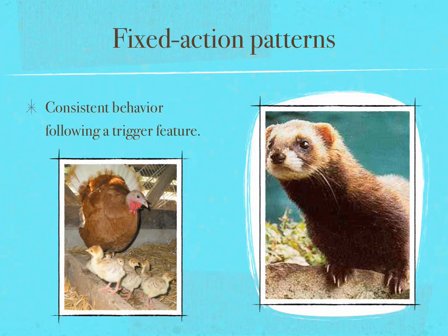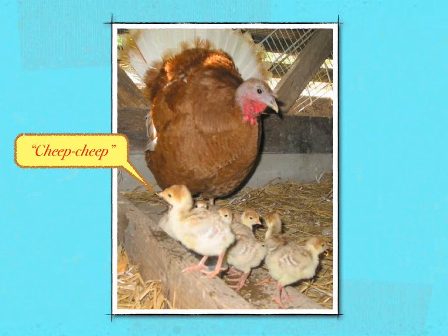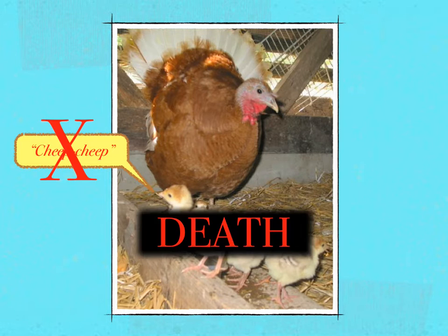Fixed action patterns denote consistent behavior following a trigger feature. Turkey mothers serve as a great example. Turkeys are good mothers — loving, watchful, and protective. They spend much of their time warming, tending, cleaning, and huddling their young beneath them. But all this mothering is triggered by one feature: the cheap-cheap noise of baby turkeys. If a chick makes the cheap-cheap noise, its mother will care for it; if it does not, the mother will ignore or sometimes kill it.